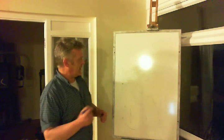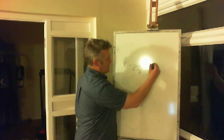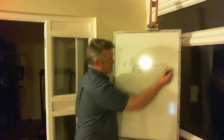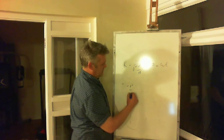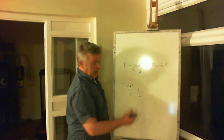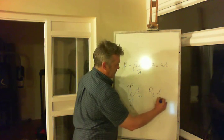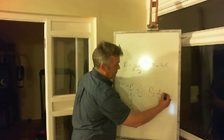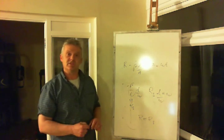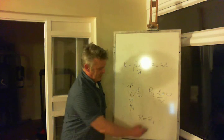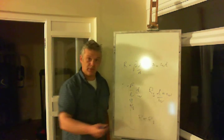Resistance equals resistivity times length divided by area. For a thin sheet, letting area equal W×T gives R = (rho/T) × (L/W). We let rho/T equal sheet resistance RS, so R = RS × (L/W). If we make this a square — length equal to width — then L/W cancels to one, and resistance equals sheet resistance. We call sheet resistance in ohms per square, because it's only true when L and W are equal.